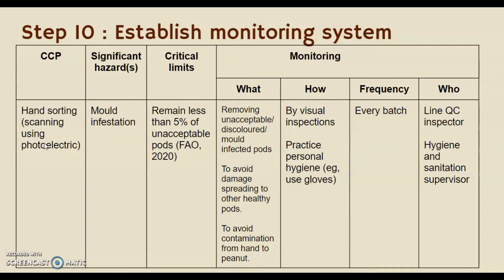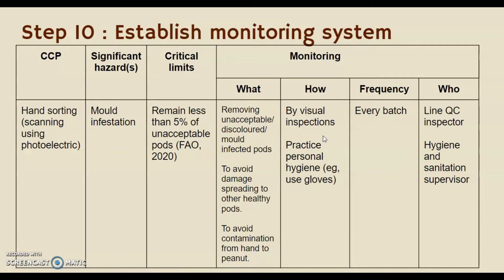The second CCP is hand sorting, using a photoelectric scanner. The significant hazard found is mold infestation, and the critical limit is to maintain less than 5% of unacceptable pods. The monitoring system aims to remove unacceptable, discolored, and mold-infected pods to avoid damage spreading to other healthy pods and to prevent contamination. Monitoring is done by visual inspection to observe defective pods and by practicing personal hygiene such as using gloves, for every batch. The PIC is the line inspector and hygiene and sanitation supervisor.